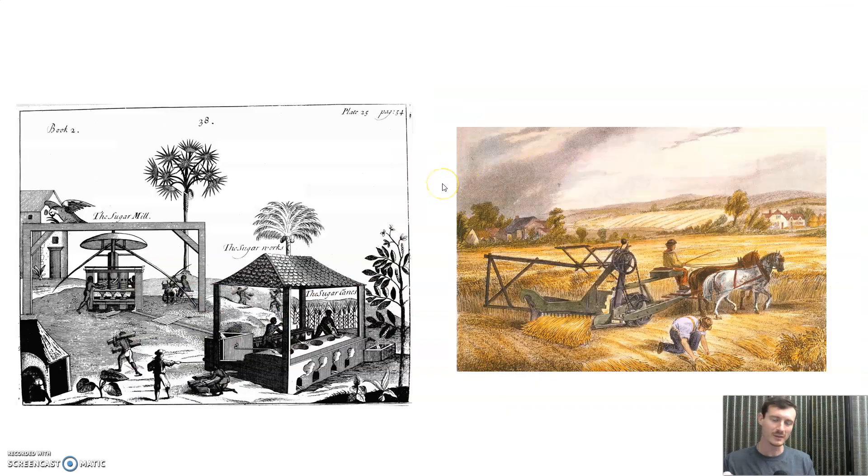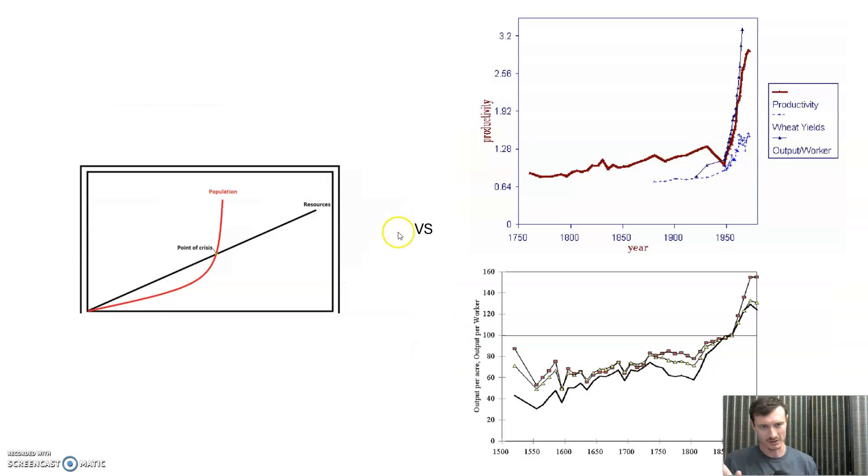Could he have foreseen developments in technology? No. Could he have been wise enough to realize that he couldn't have foreseen developments of technology? Yeah. He could have been smart enough to realize that he didn't know this. So we have this second agricultural revolution, and food production goes way up as a result.